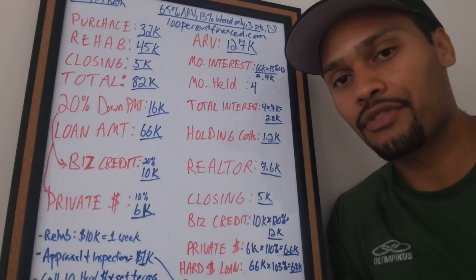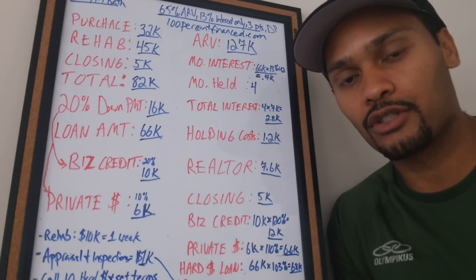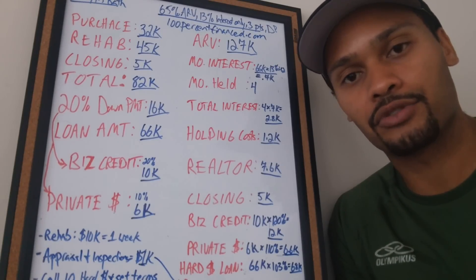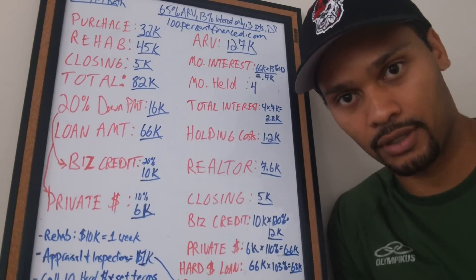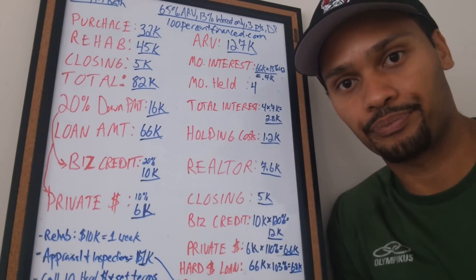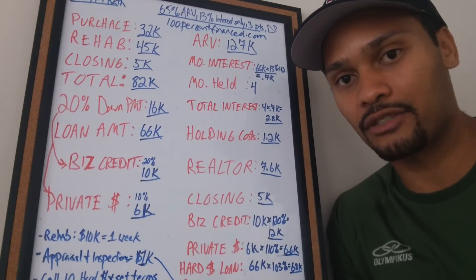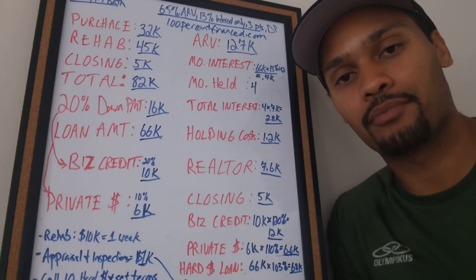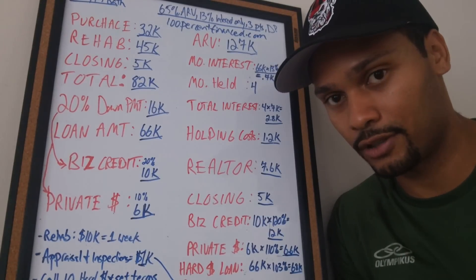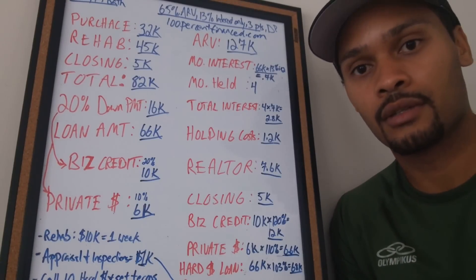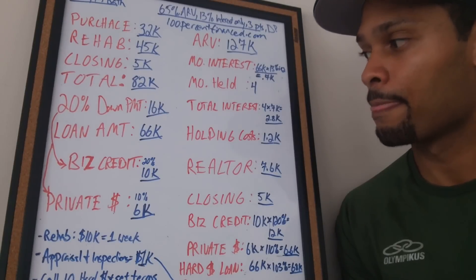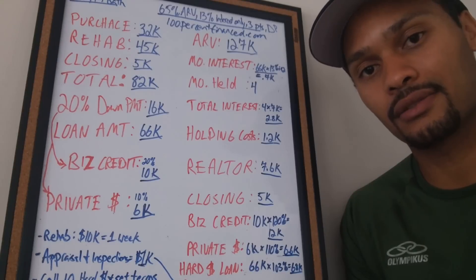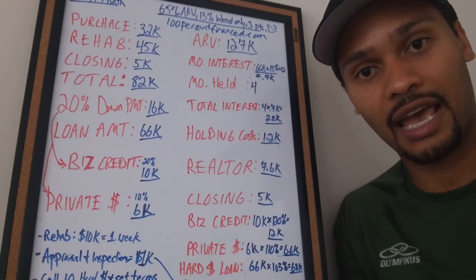So you just made $22,000 in a period of four months by buying a flip without using your own money. That, my friend, is the 100% Finance way — capital gains of over $20,000 without using your own money. People say it takes money to make money — but does it have to be your money? As you see in this illustration, it does not.